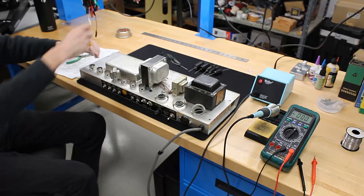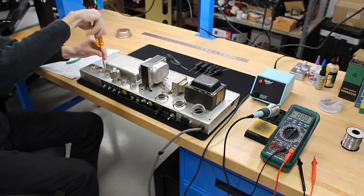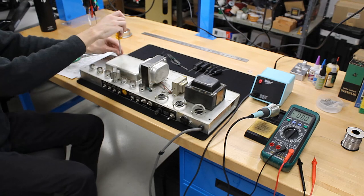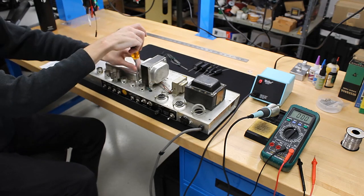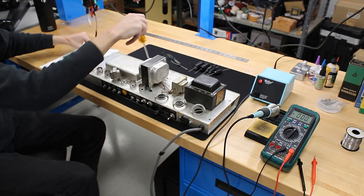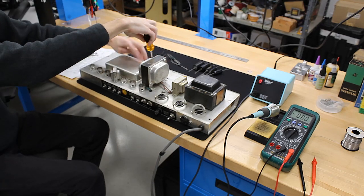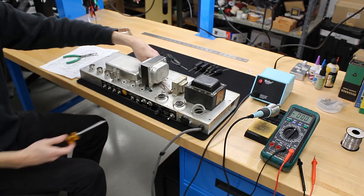Once the amp chassis is removed from the header cabinet, we'll want to access the capacitors. This model has a cap pan which must be removed with a screwdriver. Other amps may have the large filter caps wired internally.